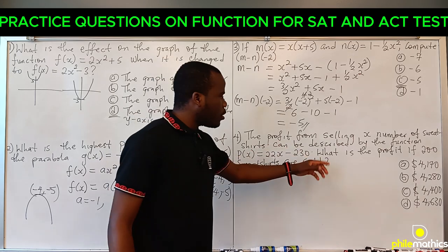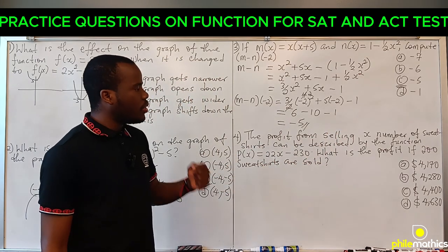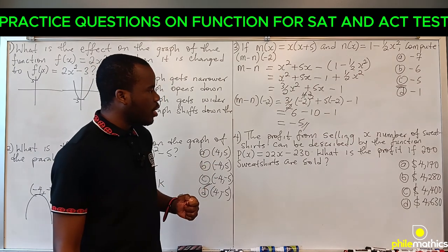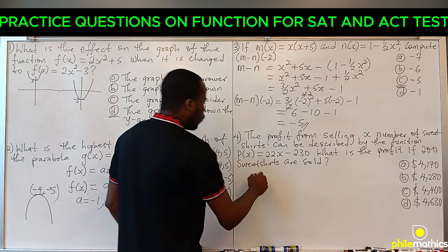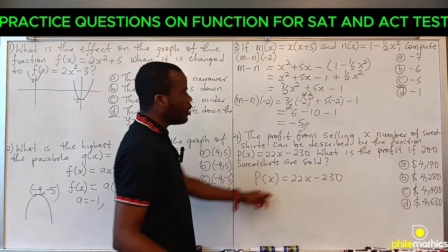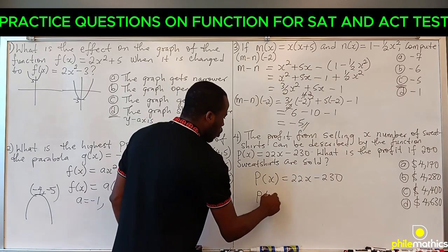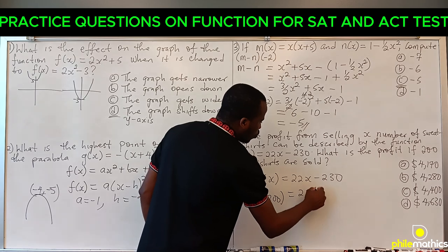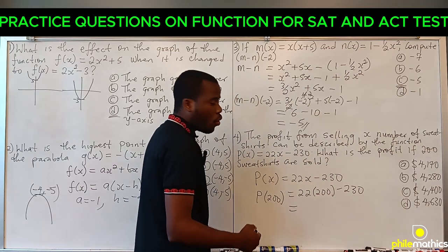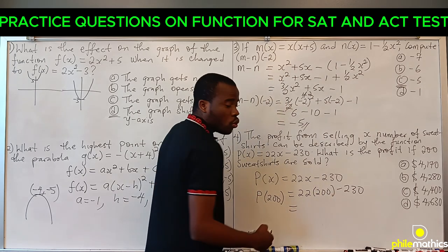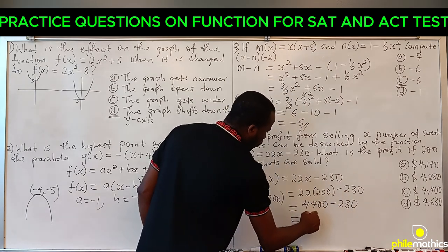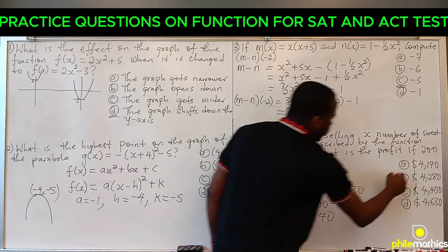Question 4: The profit from selling x sweatshirts is described by P(x) = 22x - 230. What is the profit if 200 sweatshirts are sold? We substitute 200 for x: 22 × 200 - 230 = 4400 - 230 = $4,170, which is A.